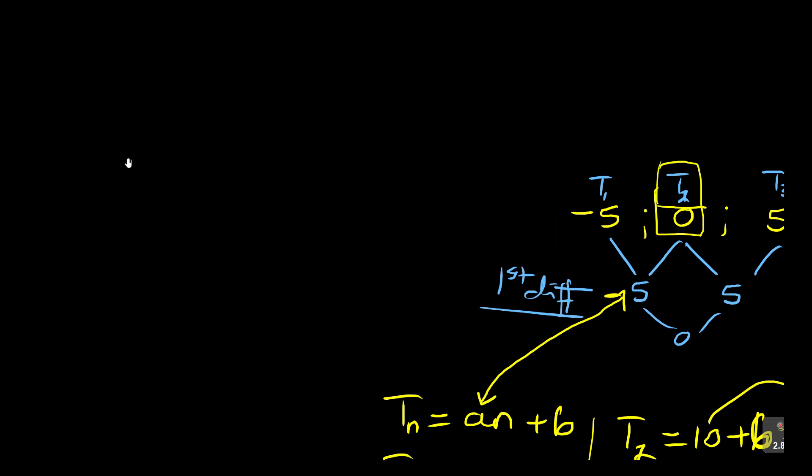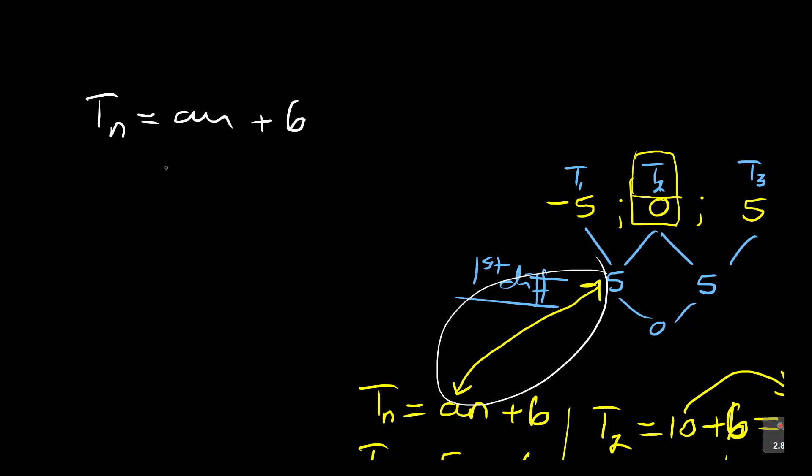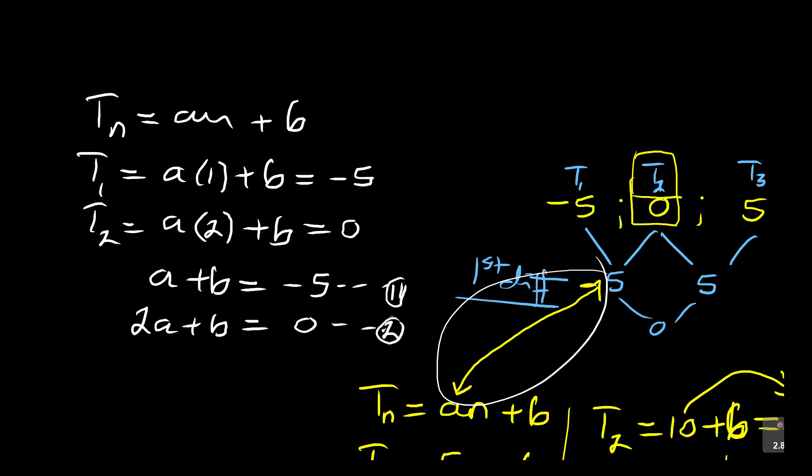But there are also two ways you could have done it. You could have said, now remember the general form is TN is equal to AN plus B. Let's say you didn't want to use this version. So what you do is you come back with the first one. Say T1 is equal to A, which we don't know, N is 1 plus B. Now we know what is T1, which is equal to negative 5. Again, T2 is equal to A times 2 plus B, and we know that it is equal to 0. So you've got two equations here. A times 1, which is A plus B is equal to negative 5. We can have that as equation 1. And then here you've got 2A plus B is equal to 0. This can be equation 2. So you can use it as a simultaneous equation.